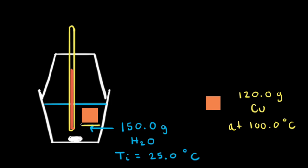The copper block has been added to the calorimeter. Since the copper is at a higher temperature than the water, heat flows from the copper block to the water, and therefore the temperature of the water will increase, which we will see on the thermometer. Heat is transferred from the copper block to the water until thermal equilibrium has been reached, which we identify by measuring the highest temperature reached on the thermometer.